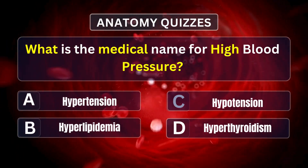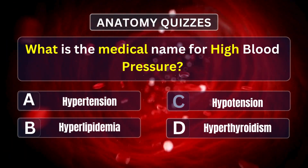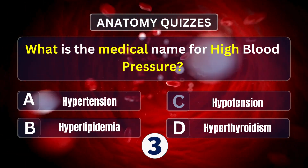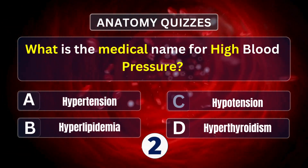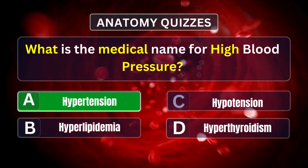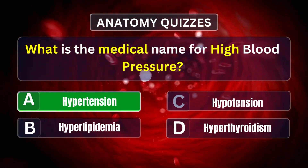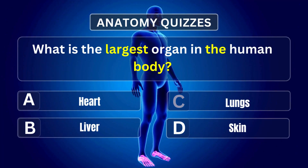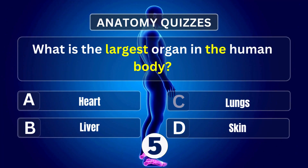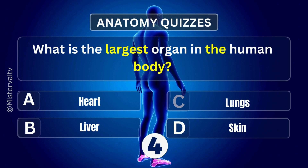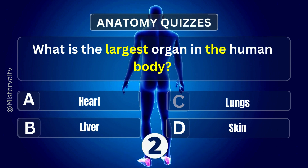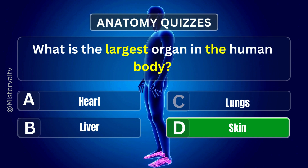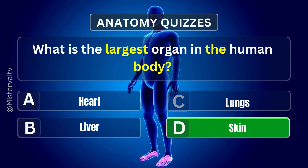What is the medical name for high blood pressure? Answer. A. Hypertension. What is the largest organ in the human body? Answer. D. Skin.